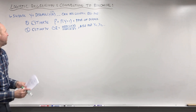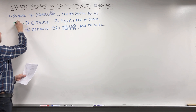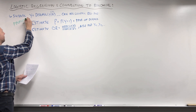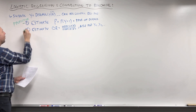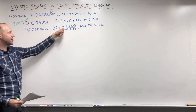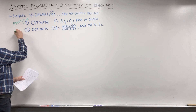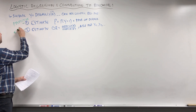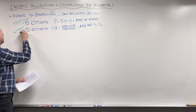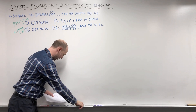We can try and estimate what's the probability of the disease — this is predictive. Or we might be trying to estimate an odds ratio: what effect does exposure have on your odds of disease? So this is looking at it as an effect size — what effect does exposure have on the odds of disease?